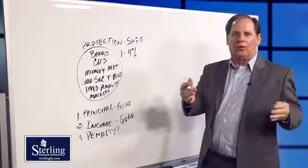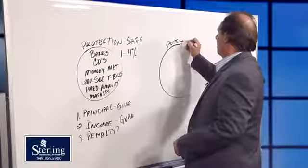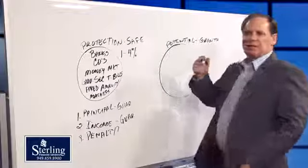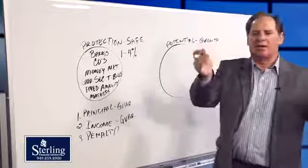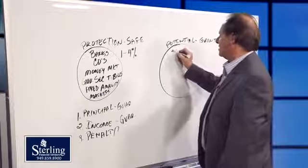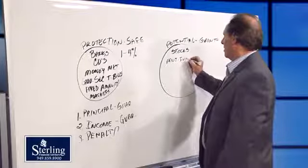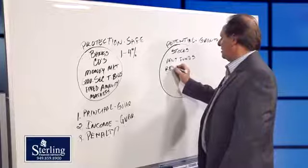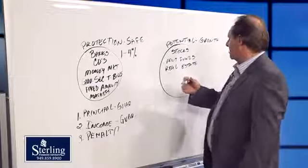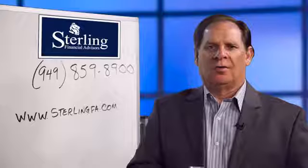The second world that we can put our money in is what I call the World of Potential — where we want potential or growth in our investments. Things like the stock market, real estate, commodities, futures, and options if you want to get aggressive. When we invest in this world, we use things like stocks, mutual funds, real estate for growth, or a managed brokerage account where you hire someone to manage your investments.